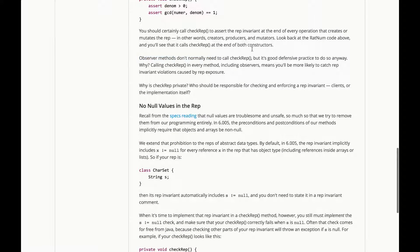Observer methods don't normally need to call CheckRep, but it's good defensive practice to do so anyway. Why? Well, you'll call CheckRep in every method, including observers, which means you'll be more likely to catch rep invariant violations caused by rep exposure.